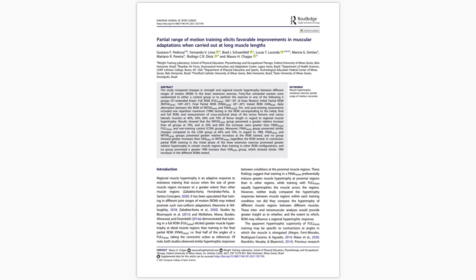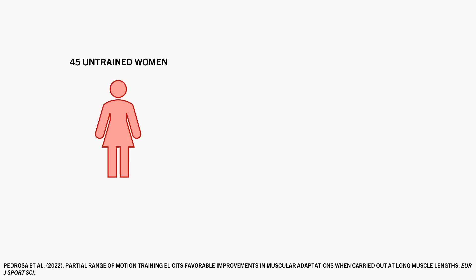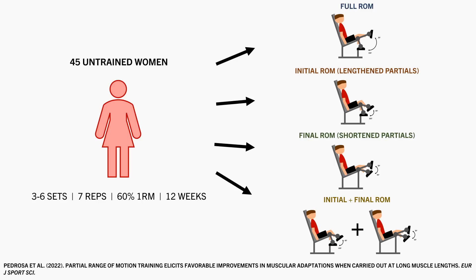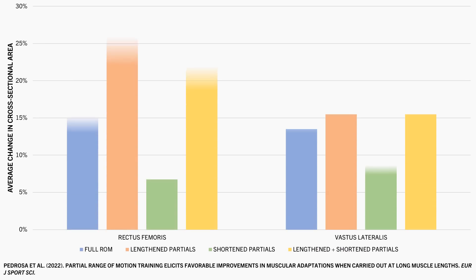As a more specific example, this study compared the effects of performing leg extensions with four different ranges of motion. 45 untrained women performed 3–6 sets of 7 reps of leg extensions at 60% 1RM, individualized to each range of motion condition, for 12 weeks. One group performed a full range of motion; another performed only the initial range when the quads are most lengthened; the third group performed only the end range when the quads are most shortened; and the last group alternated between the initial and end ranges each session. It was found that the lengthened and alternating range of motion groups saw the greatest increases in cross-sectional area of both quad muscles measured, full range of motion was next best, and partials in the shortened position were least effective.